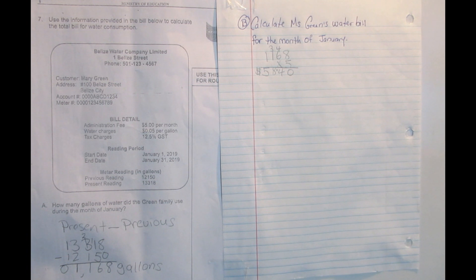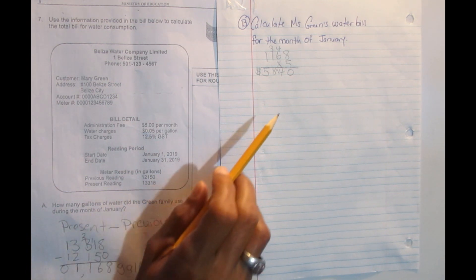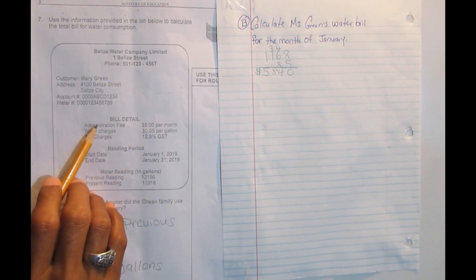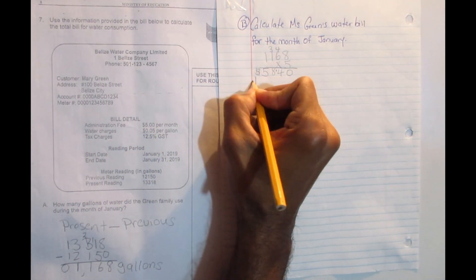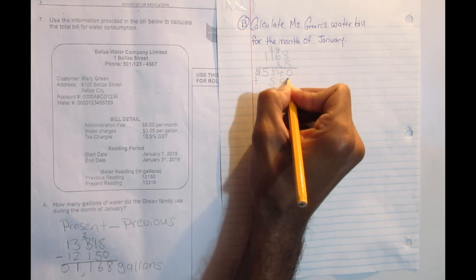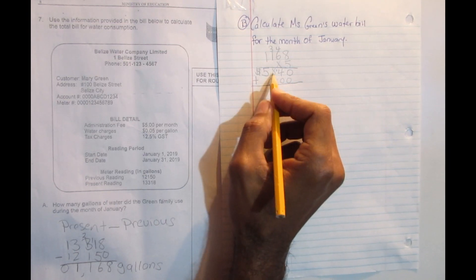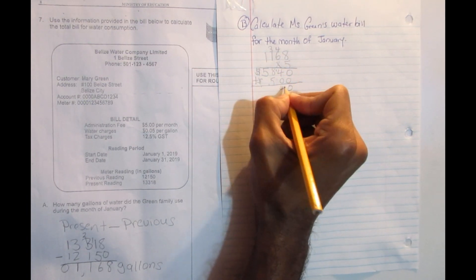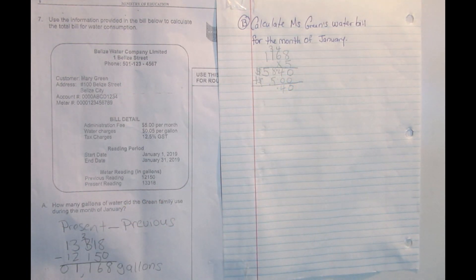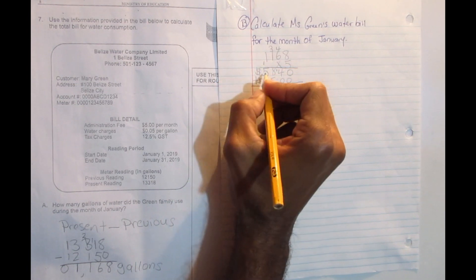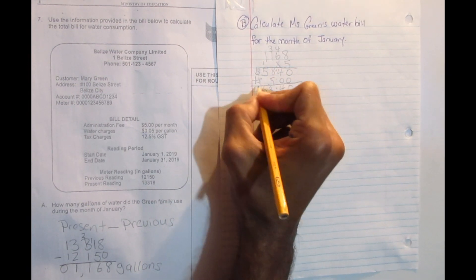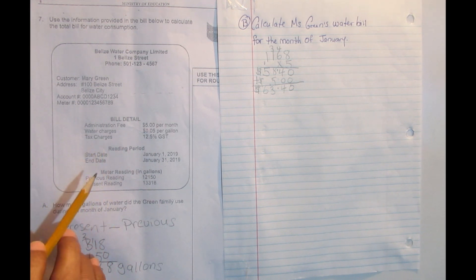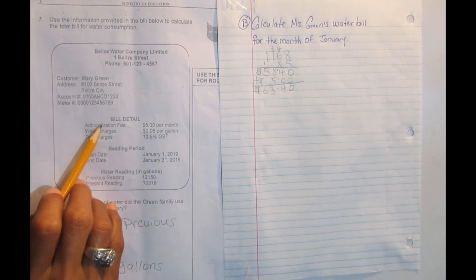We want to solve the entire monthly bill, so after multiplying the gallons by 5 cents we add the $5 administrative fee. Adding $5 to $58.40: 0 plus 0 is 0, 4 stays, place the decimal, 8 plus 5 is 13, bring down the 3 carry 1, 5 plus 1 is 6. So far the bill is at $63.40.